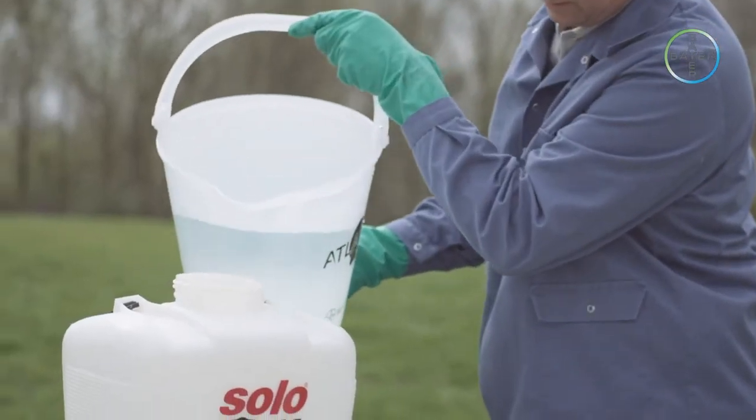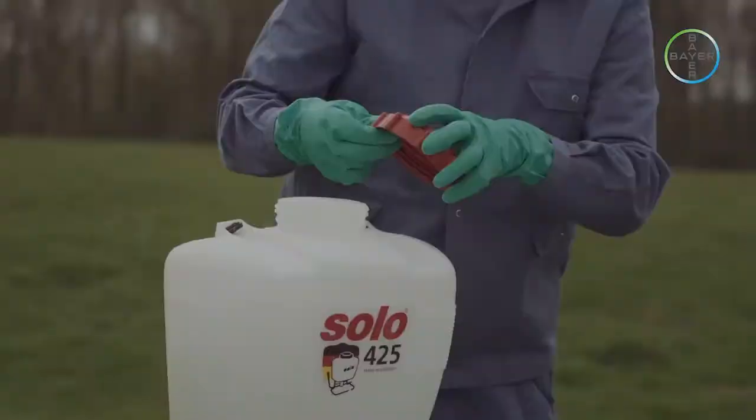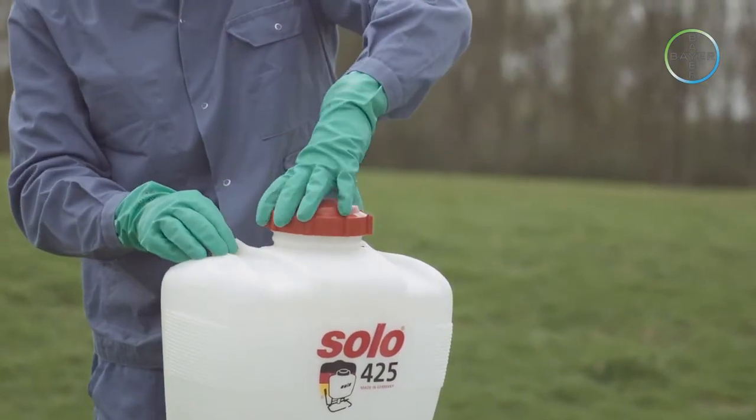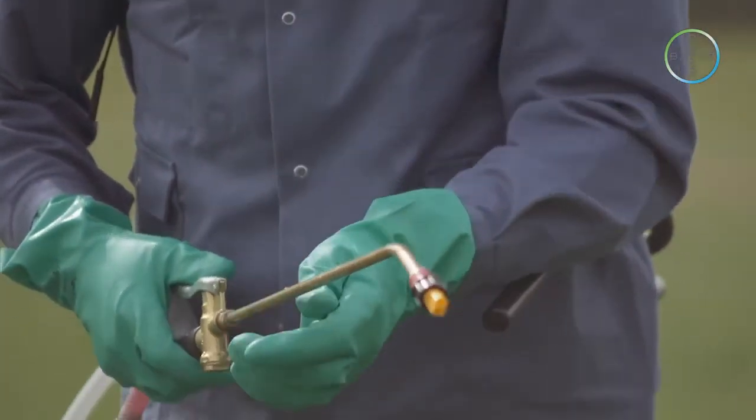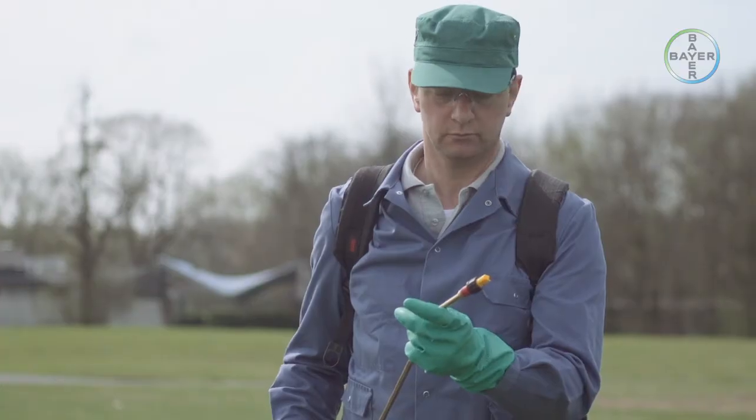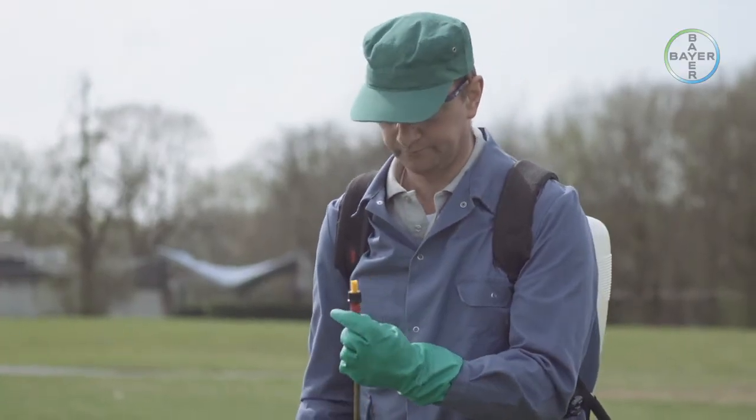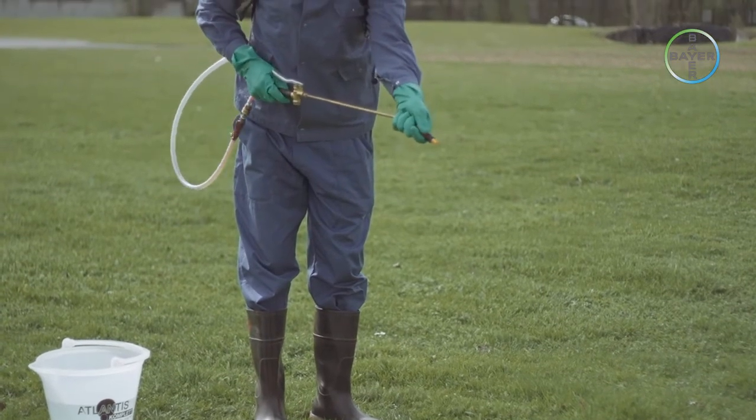The next task is to part fill the sprayer with clean water. Once this is done, the sprayer should be switched on and again checked for any leaks. The output should be carefully observed in order to check that the nozzle is not producing a distorted pattern that might indicate that it is worn or partially blocked. If the nozzle is worn or damaged, it should be replaced.